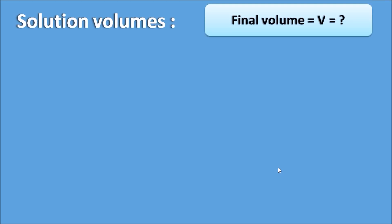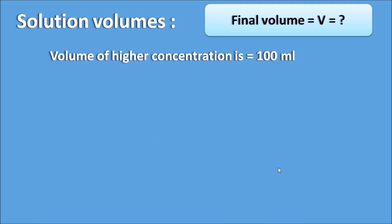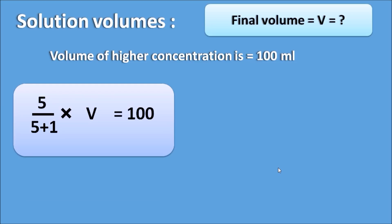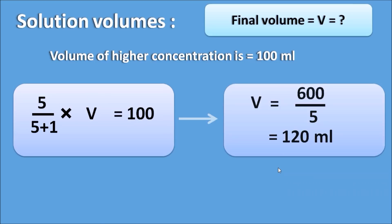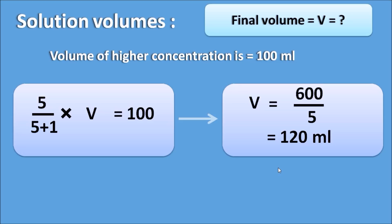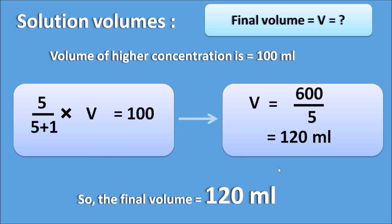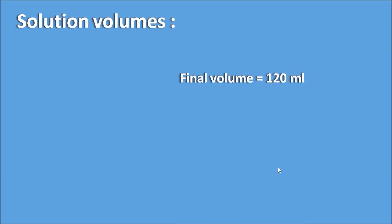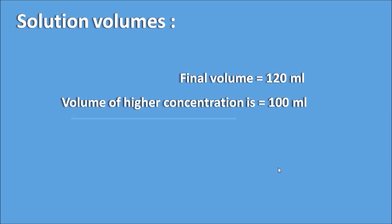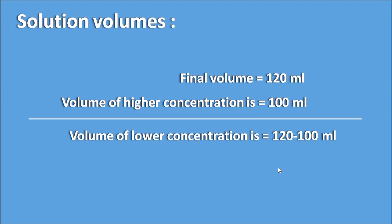Now let us calculate the solution volumes. The final volume is not given and we must calculate it, but the volume of the higher concentration is given as 100 ml. Applying the formula: 5 divided by (5 plus 1) multiplied by V equals 100, so V equals 600 divided by 5, which is 120 ml. The final volume of the allegation mixture is 120 ml. The volume of water to add is 120 minus 100, which equals 20 ml. So 100 ml of the higher concentration should be mixed with 20 ml of water to produce 120 ml of the final concentration.